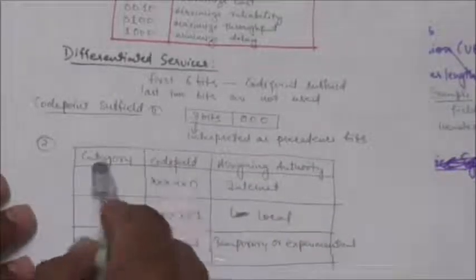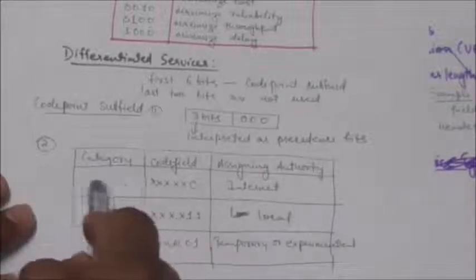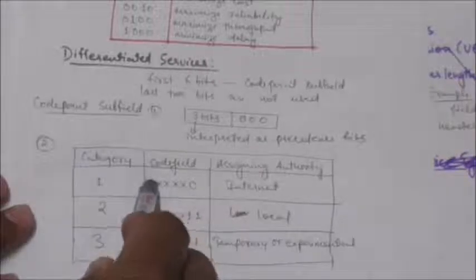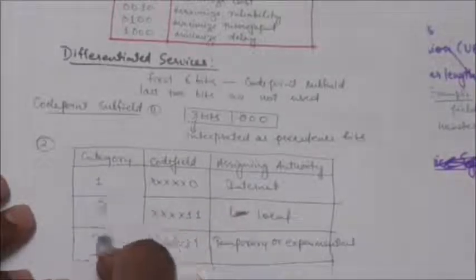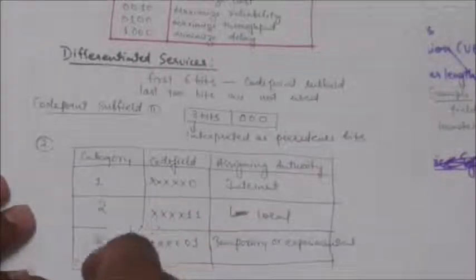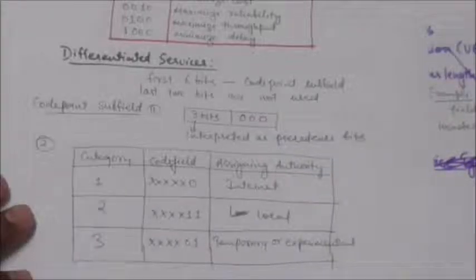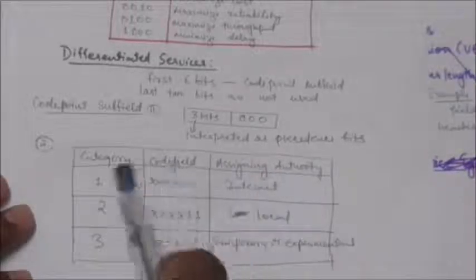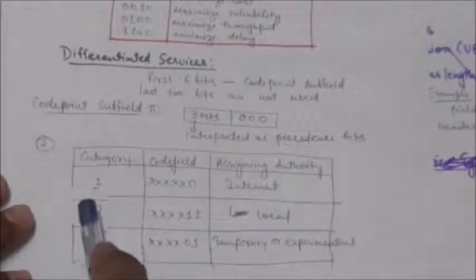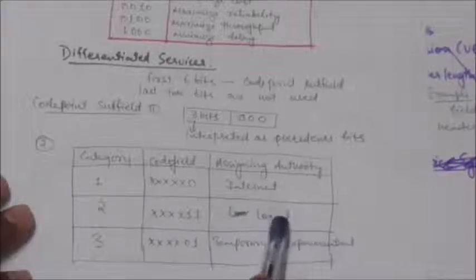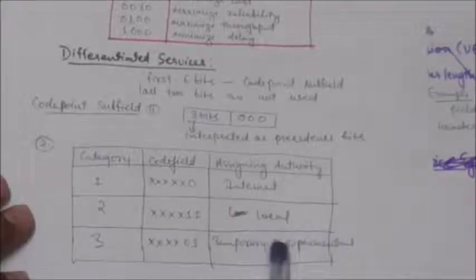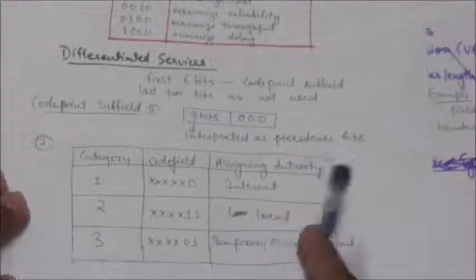The first category contains 32 service types, while the second and third categories each contain 16 service types. The first category is assigned by internet authorities, the second can be used by local authorities, and the third is temporary and can be used for experimental purposes.